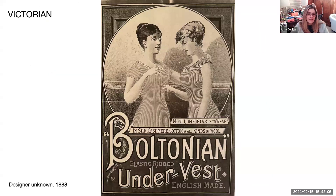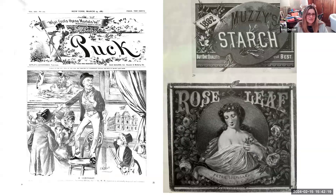Here's an example of an advertisement for an under vest, 1888, designer unknown. You can see these illustrations are highly detailed — basically like little paintings and drawings, like you would hang on a wall. They are very elaborate, very detailed, very much the opposite of simplicity.